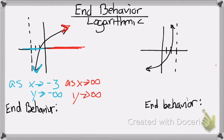So my end behavior will say, as x approaches negative 3, the y approaches negative infinity. But when x approaches positive infinity, my y approaches positive infinity.